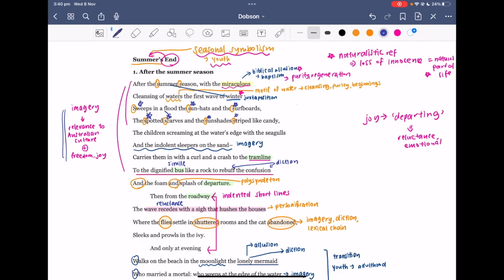Now, up to this section, everything was very naturalistic, very joyful, exciting, and whatnot. But then we have the imagery of the indolent sleepers on the sand here. And I think what you could make note of here is the imagery is one that is associated with perhaps death. So the diction of indolent, it captures this idea of laziness and the lack of movement, which is kind of in contrast to the vitality of the children screaming at the water's edge in the previous line.